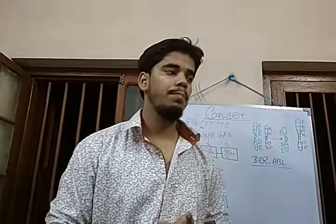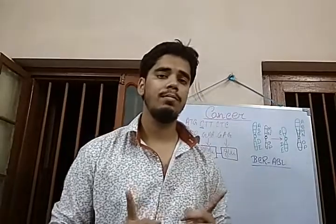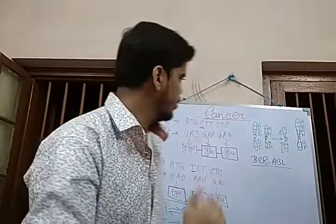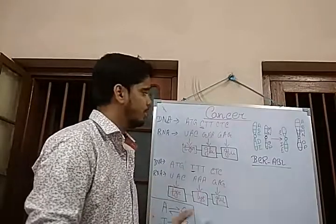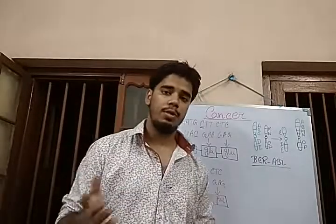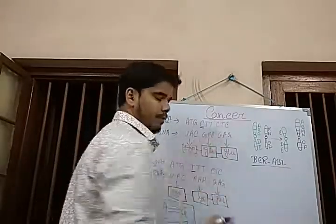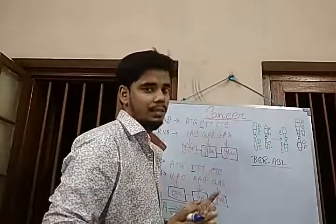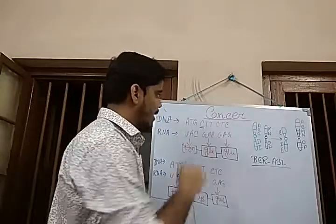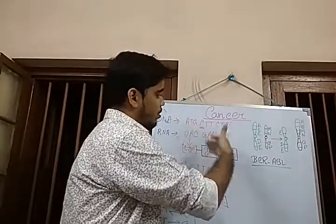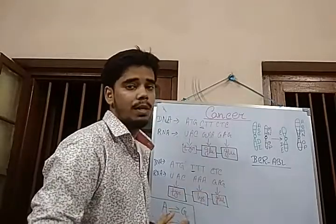Our topic is molecular-based cancer. First we know about mutation. The gene has DNA — DNA is the genetic material. This DNA is a double strand, and a single strand is used as a template. We know that this DNA strand has a nitrogenous base. This process produces RNA, and this process is called transcription.